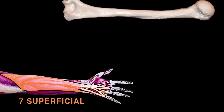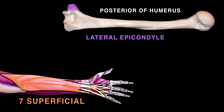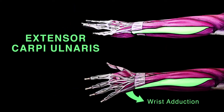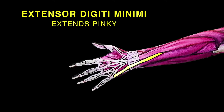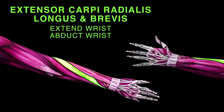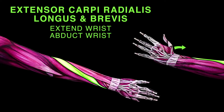Four of the seven muscles share a common tendinous origin at the lateral epicondyle: extensor digitorum, extensor carpi ulnaris, extensor digiti minimi, and extensor carpi radialis brevis.